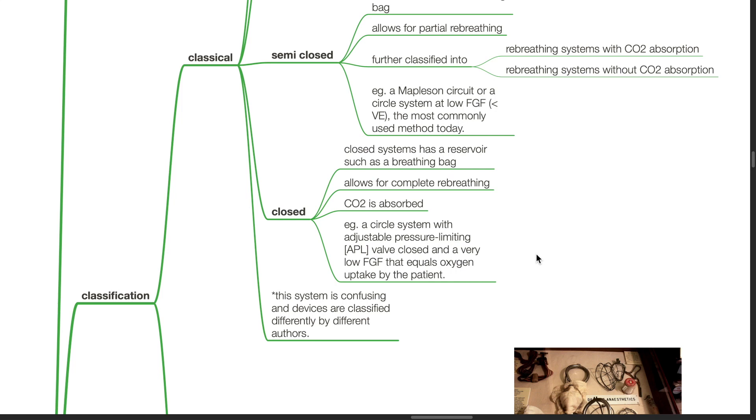Closed systems has a reservoir such as a breathing bag and allows for complete re-breathing. CO2 is absorbed. For example, a circle system with APL valve closed and a very low fresh gas flow that equals oxygen uptake by the patient.